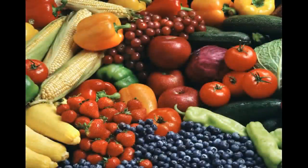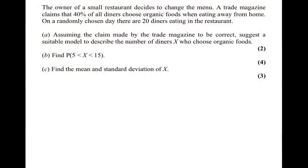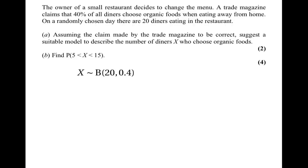The next question is from the January 2002 paper and is about organic food. It tells us that the probability of a diner choosing organic food is 40%, and we're looking at a sample of 20 diners. The first part asks for a suitable model: x has the binomial distribution with 20 trials and p = 0.4. It then asks for the probability that x is greater than 5 and less than 15.